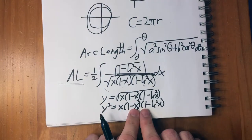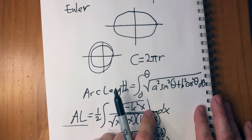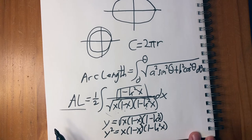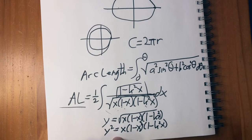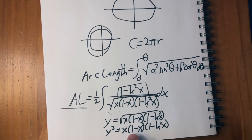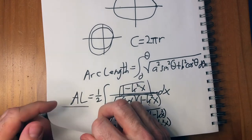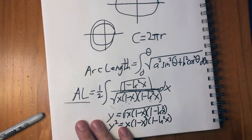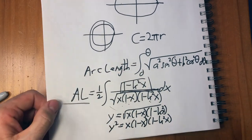That squared relation — y² equals a cubic — is what an elliptic function is. Elliptic functions are the inverse function of the arc length formula for an ellipse. It turns out this has far-reaching uses, implications, and connections. That's why so much focus since then has been on curves of the form y² = x³ + .... That's where elliptic curves get their name: it's the inverse of the formula for the arc length of an ellipse.